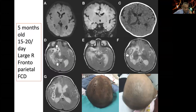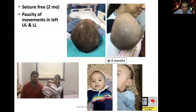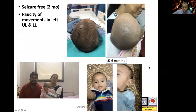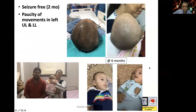A five-month-old child with a large frontoparietal cortical dysplasia underwent hemispheric disconnection using the X technique, achieving complete disconnection. Immediate post-op was clean, and after one week when sutures were removed you couldn't even make out where surgery was done. At six-month follow-up the child was completely seizure-free and parents were very happy.